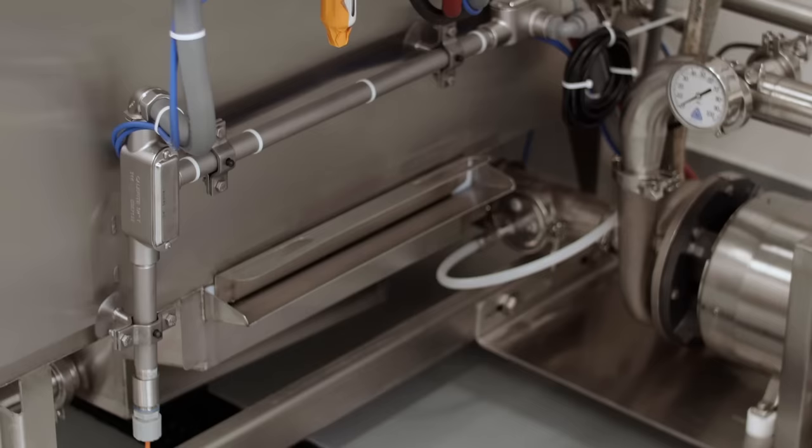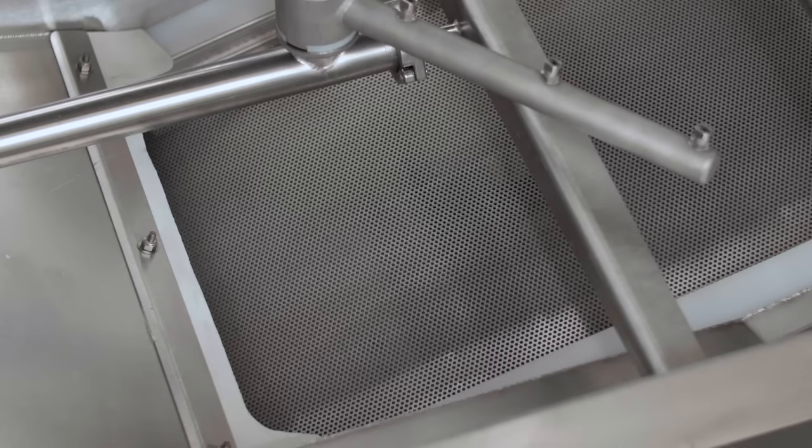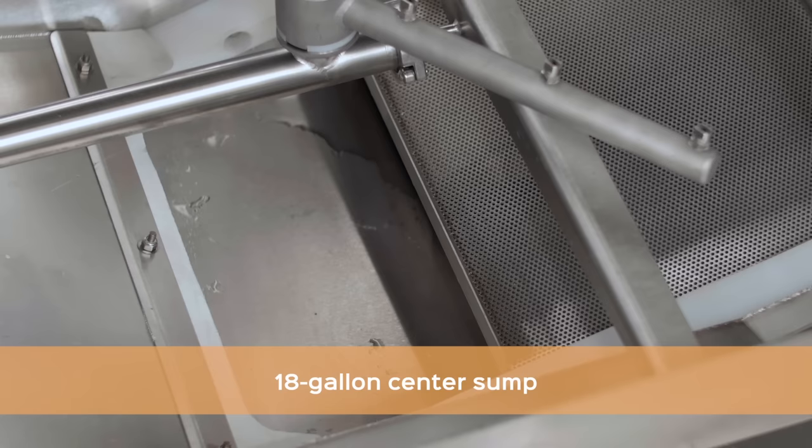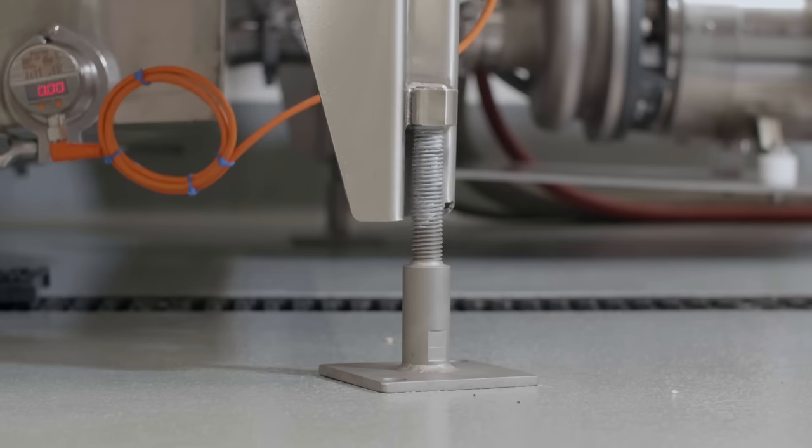The tray strainer captures larger soils. The system's 18-gallon center sump results in significant water savings. A water level sensor is placed in the center sump to ensure ample water supply. The Sanacab maintains a sanitary open-channel frame design.